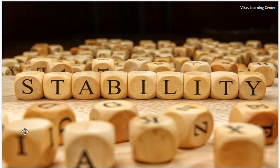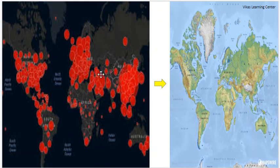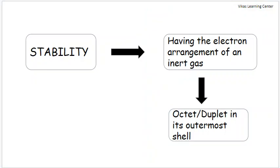As we know, everything in this world wants to be in a stable form. If we look at the current pandemic scenario, we find almost all countries across the globe are not at all stable — they are struggling very hard to return to a stable form by eradicating COVID-19. In the case of atoms, stability means having the electronic arrangement of an inert gas — that is, either to have an octet or a duet in its outermost shell.